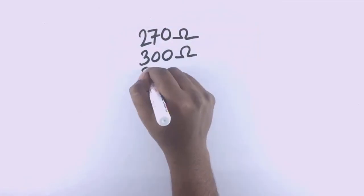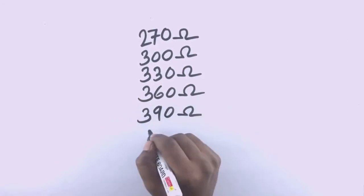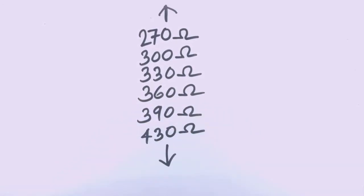Resistors come in many different resistance values. How will we find the perfect resistor for the job? This is where we use Ohm's law.